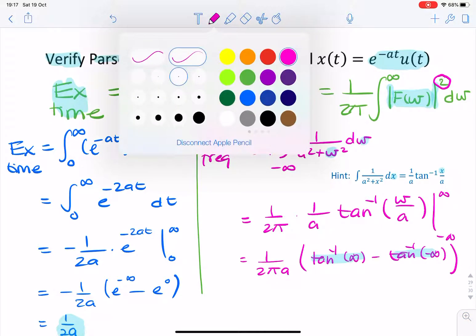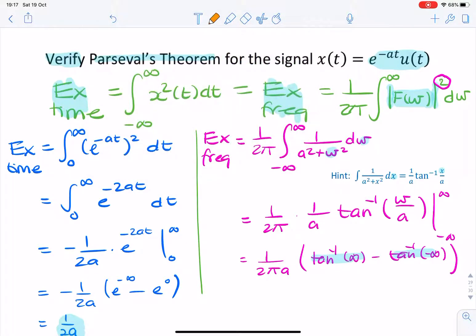So these two numbers, you can't find from a calculator. But the tan inverse of infinity is pi over 2. And the tan inverse of minus infinity is minus pi over 2. So the difference between them is pi.